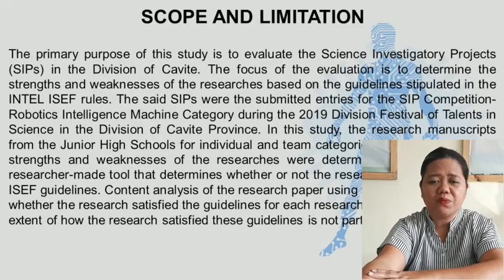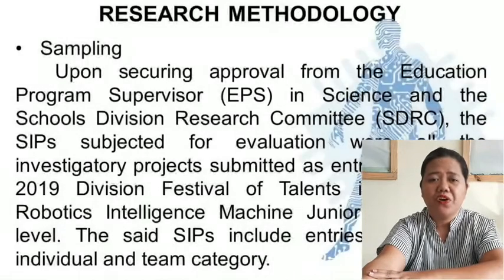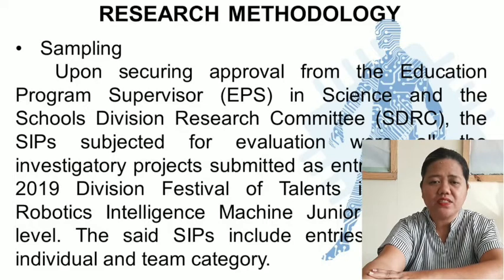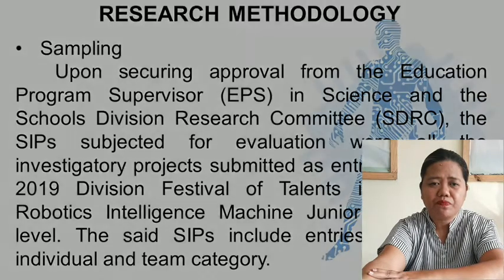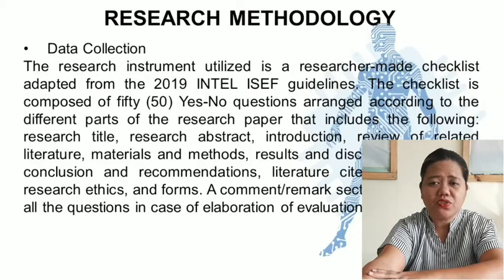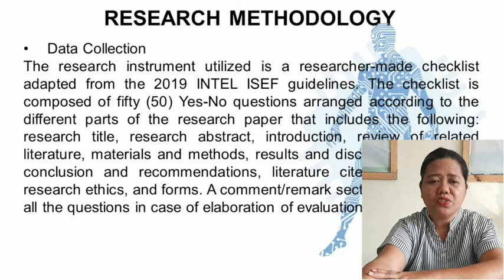Content analysis of the research paper using the tool focused only on whether the research satisfied the guidelines for its research paper components. The extent of how the research satisfied this guidance is not part of the study. For sampling, upon securing approval from the EPS in Science and the SDRC, all the investigatory projects submitted as entries during the 2019 Division Festival of Talents in Science, Robotics Intelligence Machine, junior high school level, including both individual and team category entries, were subjected for evaluation. The research instrument utilized a researcher-made checklist adapted from the 2019 Intel ISEF guidelines, composed of 15 yes-or-no questions arranged according to the different parts of the research paper.